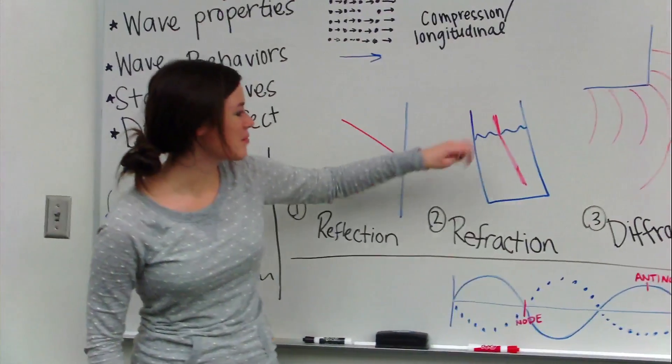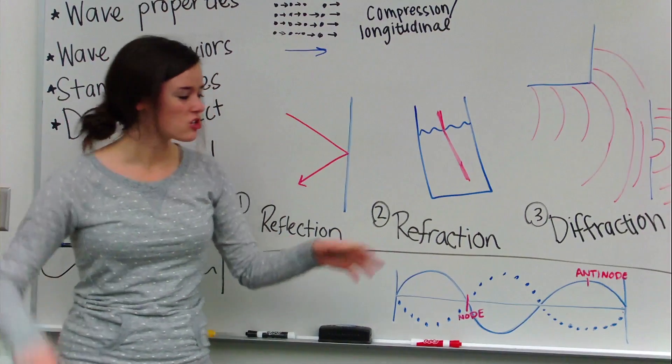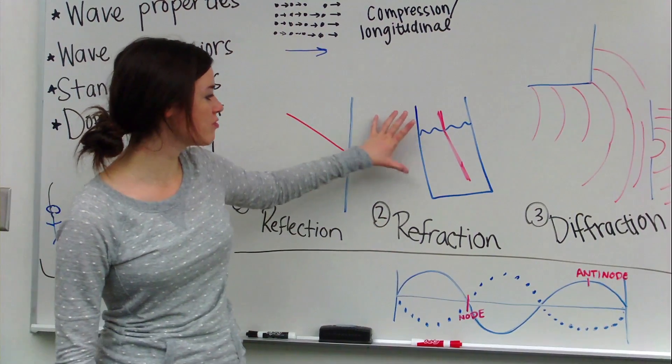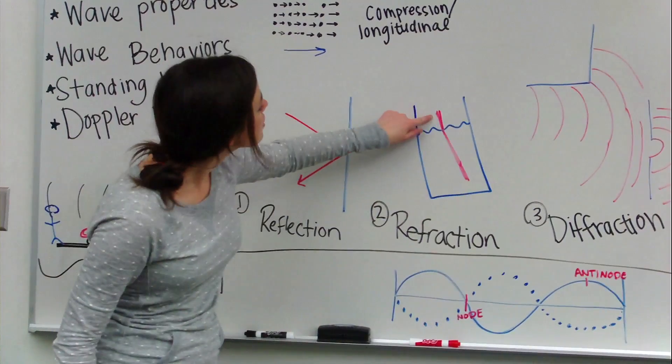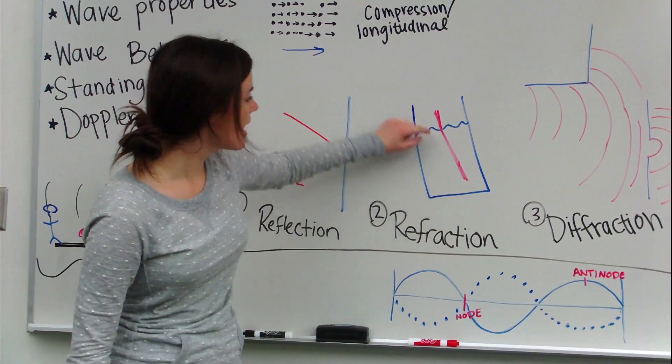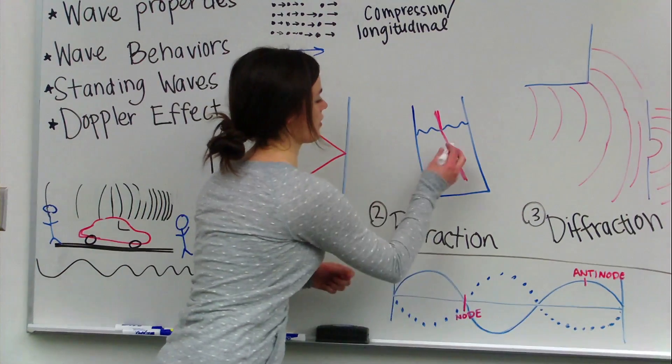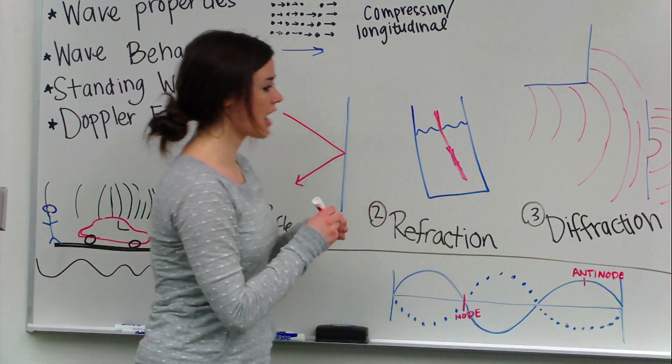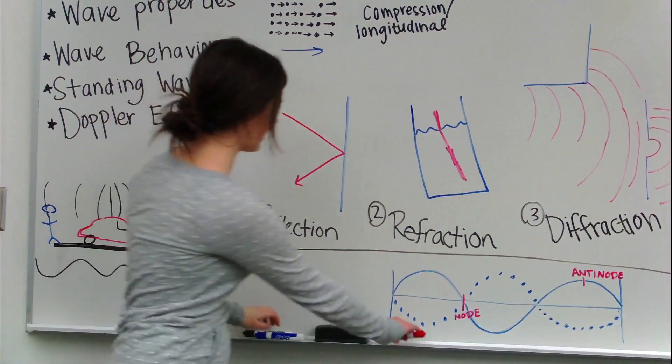Refraction is where you have a change in medium, and that wave is going to bend. So, we have a cup of water and a straw. And as you look into that clear cup, you can see the air up here, which is one medium, and the water down here. As you look at it, the wave kind of appears to bend as we're looking at it.